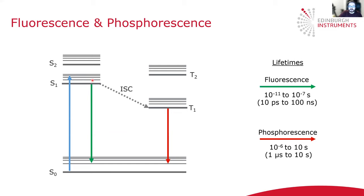Alternatively, after the molecule has been excited to the S1 state, it may undergo an intersystem crossing to the T1 triplet state. A radiative relaxation from the triplet state to the ground state results in phosphorescence. Phosphorescence occurs on a longer timescale, typically having a lifetime in the one microsecond to ten seconds region, and this is because it is a forbidden transition — you are breaking conservation of angular momentum — which makes phosphorescence a slower transition.